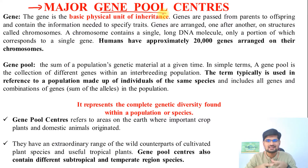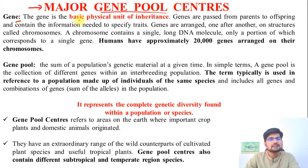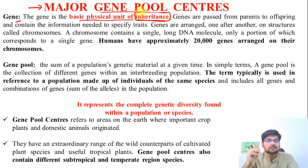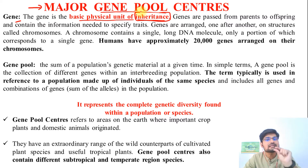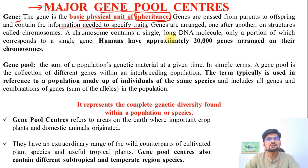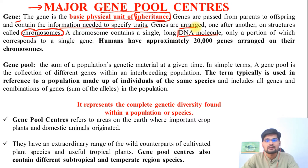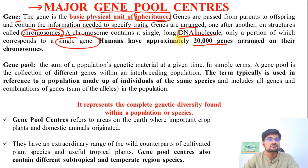So what is this gene? Gene is the basic physical unit of inheritance — it carries codes and traits inherited from one generation to the next, from parents to offspring. Genes are arranged one after the other on structures called chromosomes. A chromosome contains a single long DNA molecule, deoxyribonucleic acid, and only a portion of these corresponds to a single gene. Humans have approximately 20,000 genes arranged on their chromosomes.